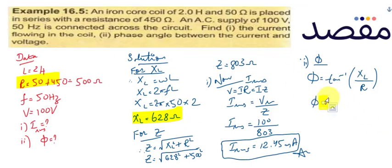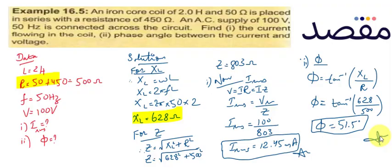So here we have phi equals tan inverse of 628 divided by 500, which gives us 51.5 degrees. So this will be our phase angle and that's our answer.